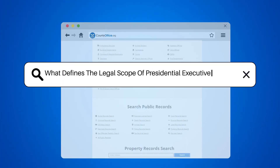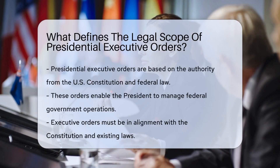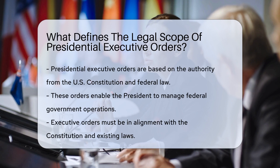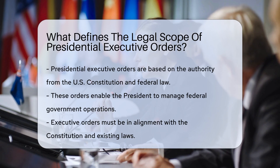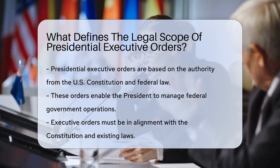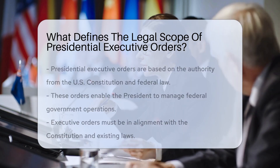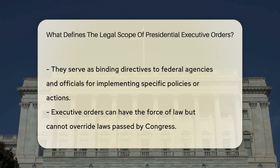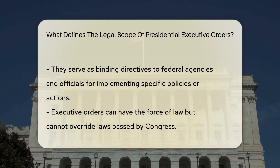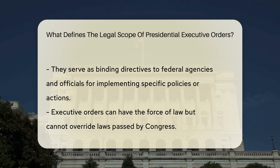What defines the legal scope of presidential executive orders? Presidential executive orders derive authority from the U.S. Constitution and federal law, allowing the president to manage the operations of the federal government. Executive orders must align with the Constitution and existing laws. They are binding directives for federal agencies and officials to implement specific policies or actions.